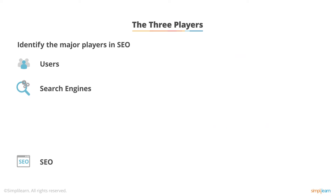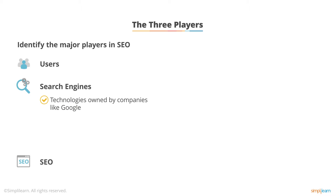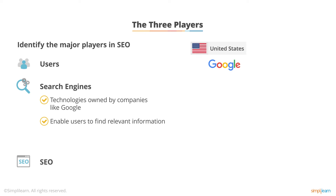Let's dive into search engines themselves. Search engines are technologies owned by technology companies. The most common one, of course, is Google — a company based out of Mountain View, California. It's dominating the arena of search right now and has been for a while, but it's not the only player in the game. The other big ones in the United States are Yahoo, which has been around for a long time, and Bing, which is owned by Microsoft.